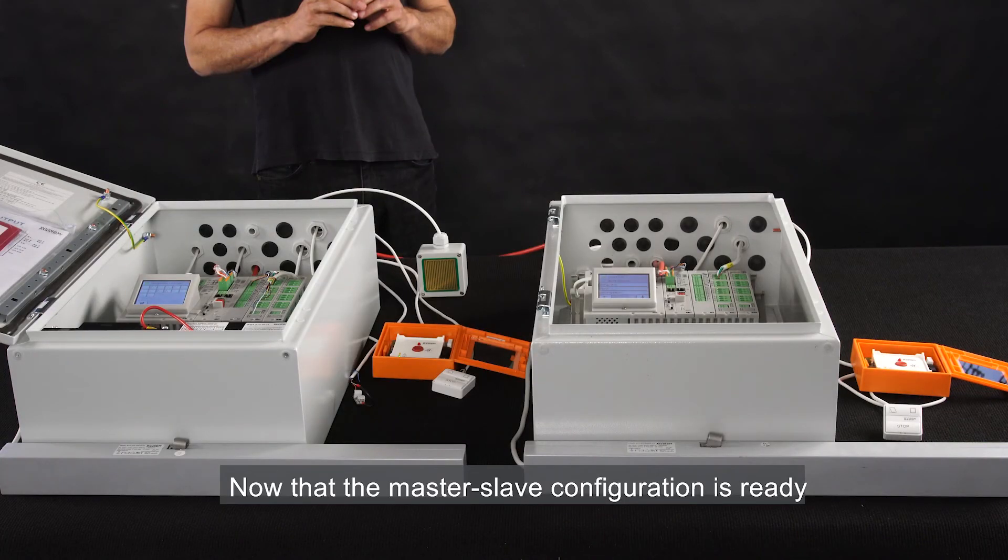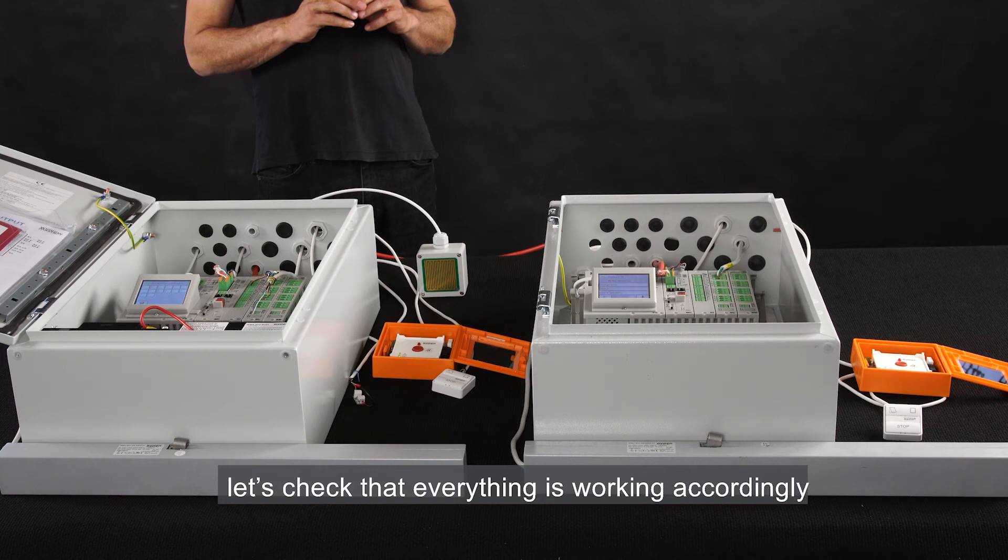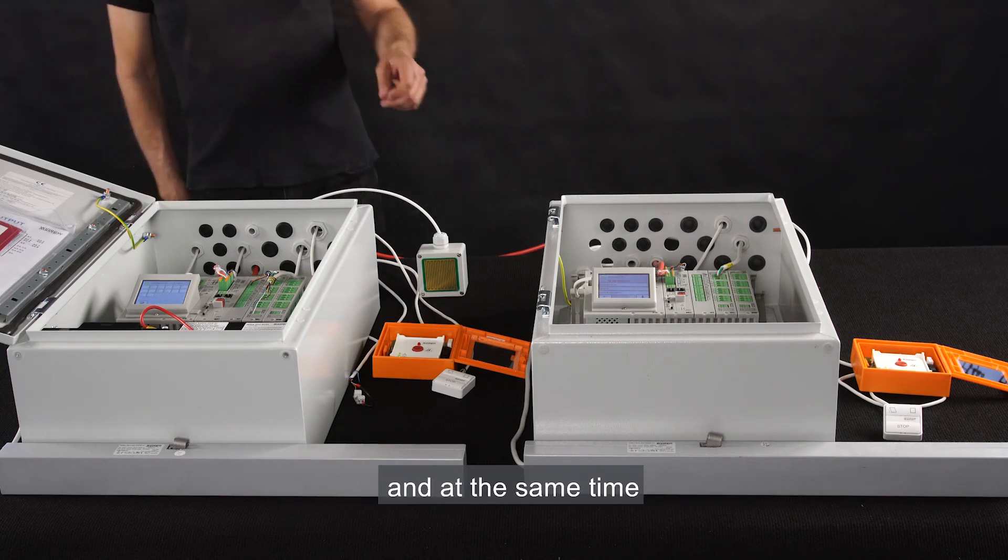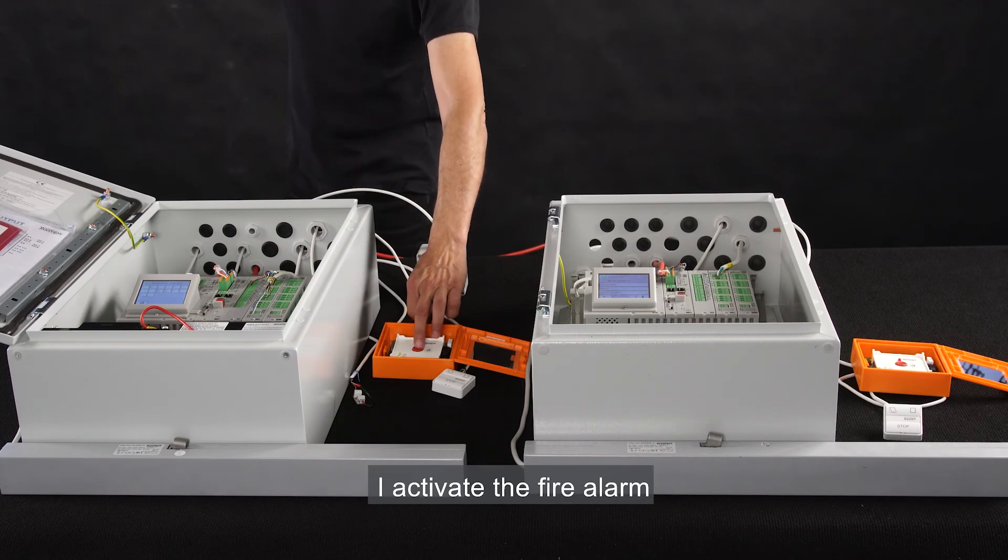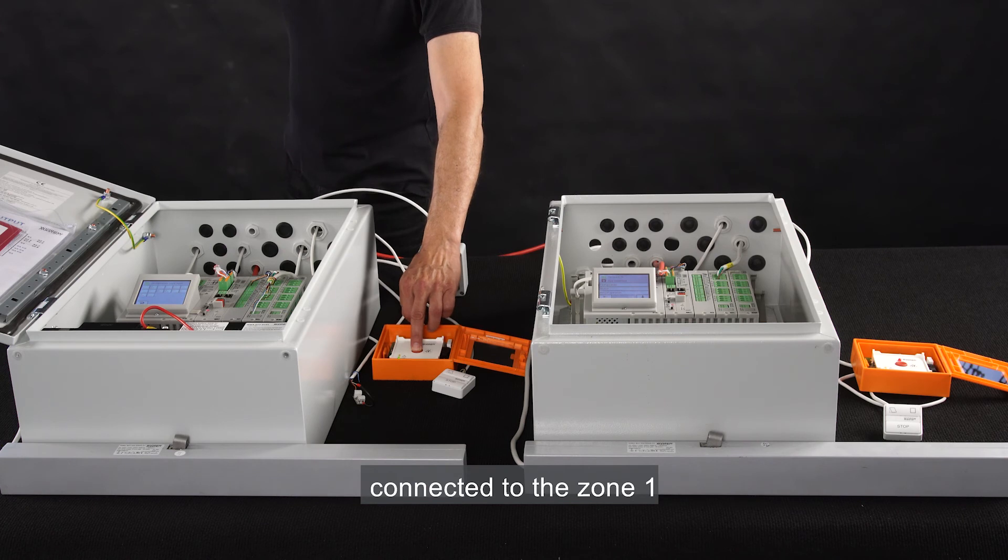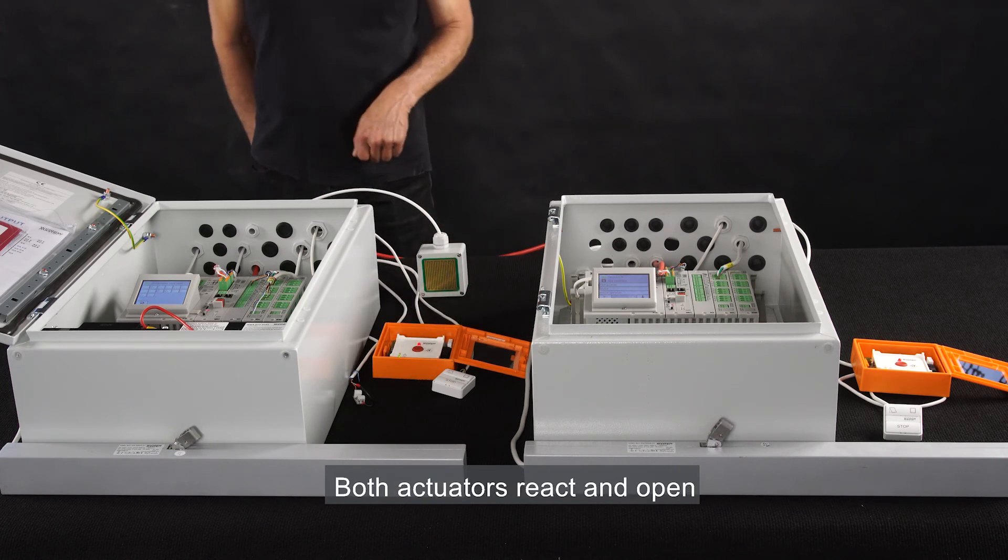Now that the master-slave configuration is ready, let's check that everything is working accordingly. If I activate one of the zones, the other one will react in the same way and at the same time. I activate the fire alarm by pressing the red button on the brake glass unit connected to zone 1. Both actuators react and open, and the red LEDs on both brake glass units are on.